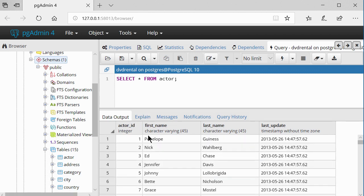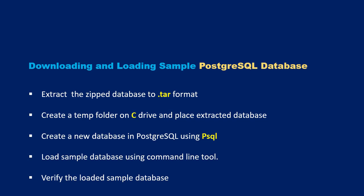In this video, we downloaded and loaded a sample PostgreSQL database. We extracted the zipped database into a .tar format, created a temp folder and placed the file there, created a new database in PostgreSQL using PSQL, loaded the sample database using the command line tool, and verified the loaded database by running a basic query. Thanks for watching. If you had any problems, please feel free to contact me. Bye for now.